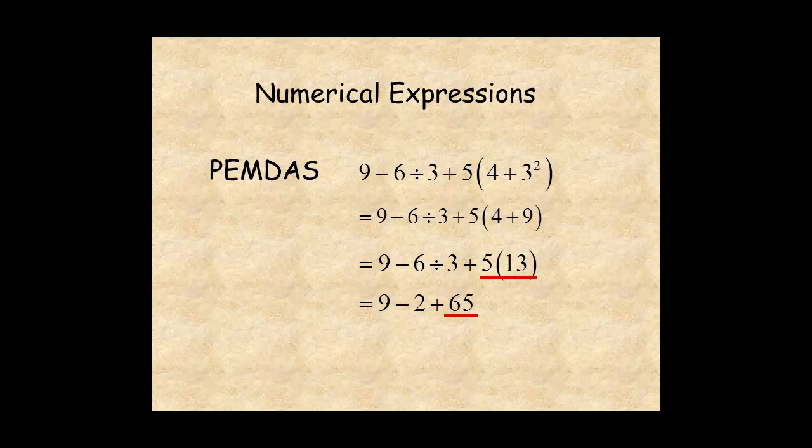Now, perform addition and subtraction as they occur left to right. 9 minus 2 is 7. And finally, 7 plus 65 is 72.